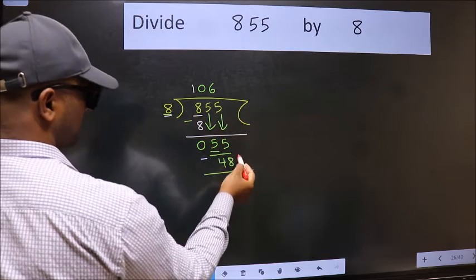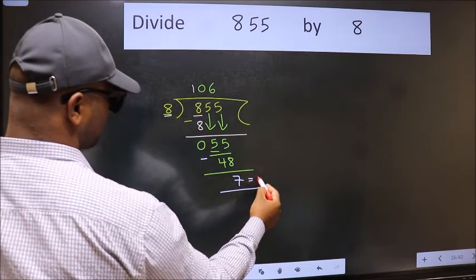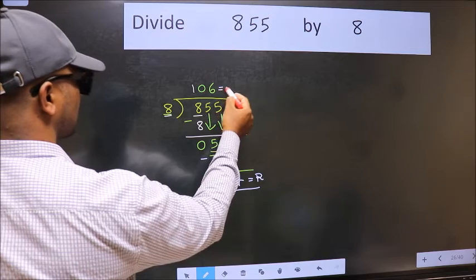No more numbers to bring down, so we stop here. This is our remainder and this is our quotient.